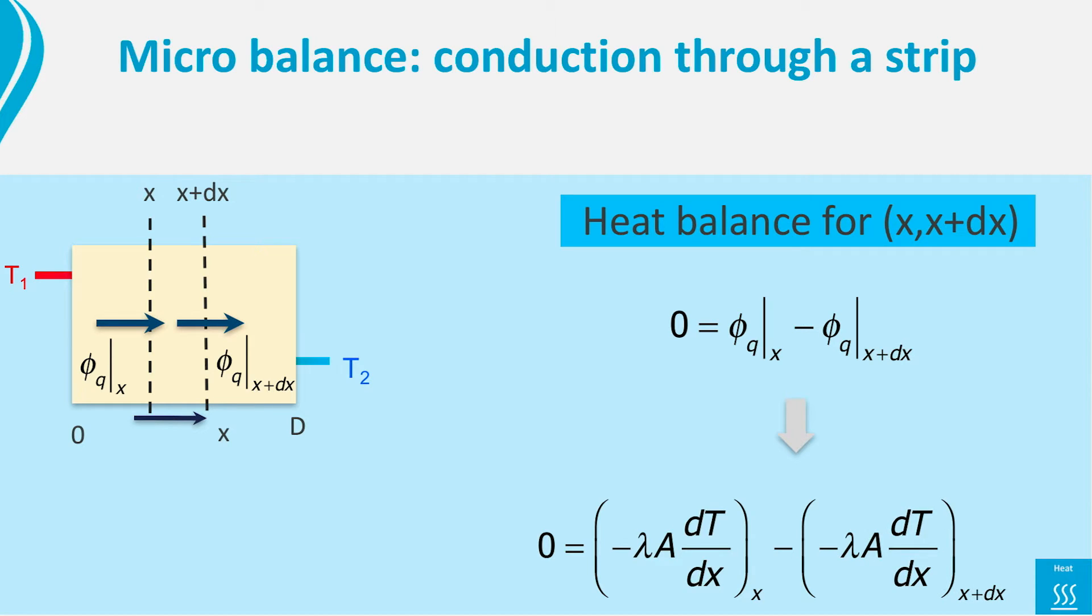First let's simplify this as much as possible. We have the left and the right area of the strip, that is A, in both terms. As A is a given constant, we can divide it out. Secondly, we take a material that has a constant lambda, like a piece of wood. Thus, we can divide lambda out as well.